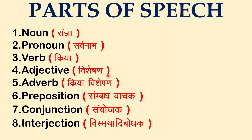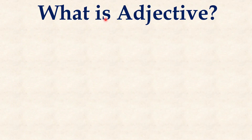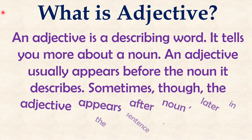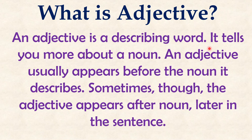These are the most important parts of speech. So let's start today's session. What is adjective? The definition of the adjective is: an adjective is a describing word. It tells you more about the noun. An adjective usually appears before the noun it describes. Sometimes, though, the adjective appears after the noun later in the sentence. The basic thing is that it tells you more about the noun — the word which tells you more about the noun, that word we call as an adjective in the sentence.